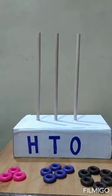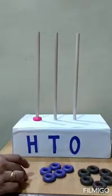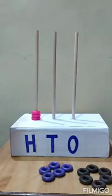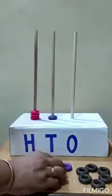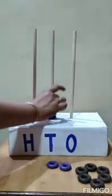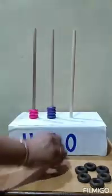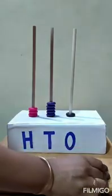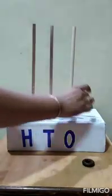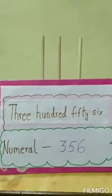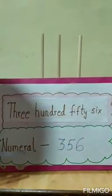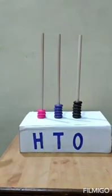Now, we will represent 300 on the abacus — this is 100, this is 200, and this becomes 300. And now we will represent 50: this becomes 10, 20, 30, 40, and 50. And now we will be representing 1's — how many 1's? 6. So this is 1, 2, 3, 4, 5 and 6. In this way, we have represented the number name 356 in numeral form and presented it on the abacus.